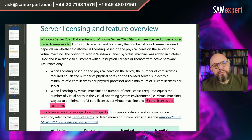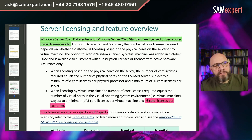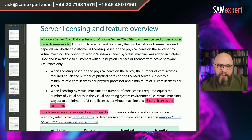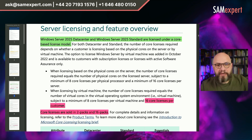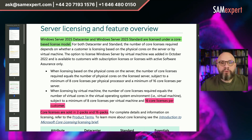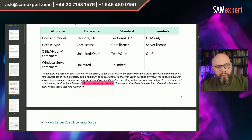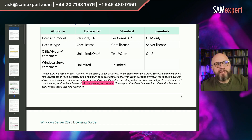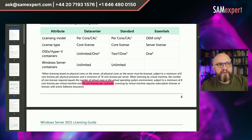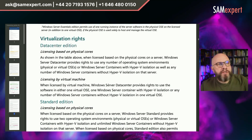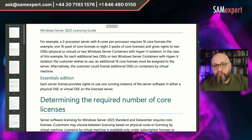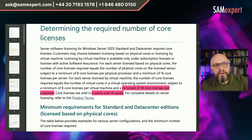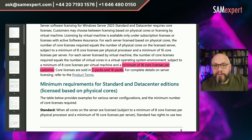The other bit that is not dangerously wrong is about core packs. It says core licenses are sold in two packs and 16 packs. There are also eight core packs which are sold through the CSP channel — please remember that in the CSP channel, licenses are sold in eight core packs. They repeated the same mistake stating that per-VM licensing requires at least 16 core licenses per customer. As I already said, that's an error. Moving on, they cover virtualization rights, and again in the calculation rules we see the same two mistakes: the non-existent minimum and the missing eight core packs.